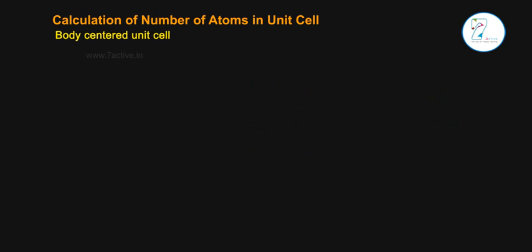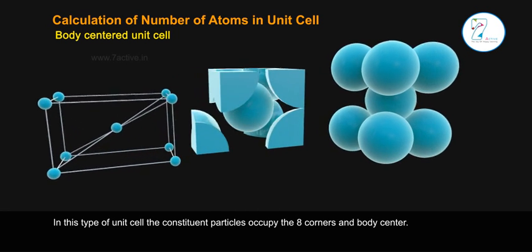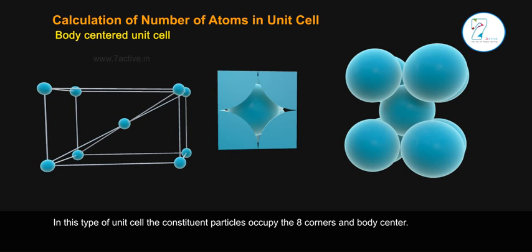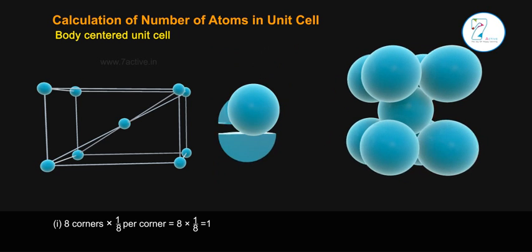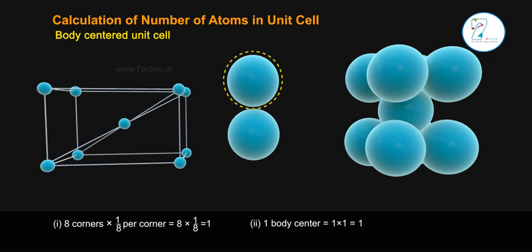Body-centered unit cell: In this type of unit cell, the constituent particles occupy the eight corners and body center. The total number of atoms: (1) 8 corners × (1/8) per corner = 1. (2) 1 body center × 1 = 1. Total: 2 atoms.